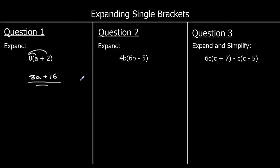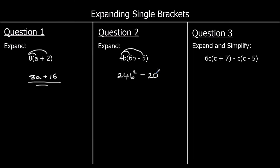Question 2: we've got 4b times 6b. 4 times 6 is 24, and b times b is b squared. Then we've got 4b times a negative 5, so it's going to be negative, and 4 fives are 20. So 24b² minus 20b.